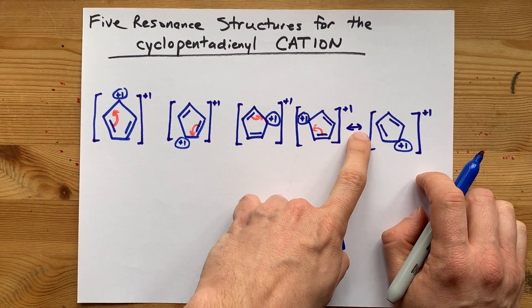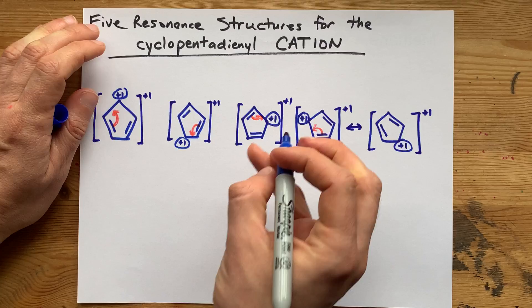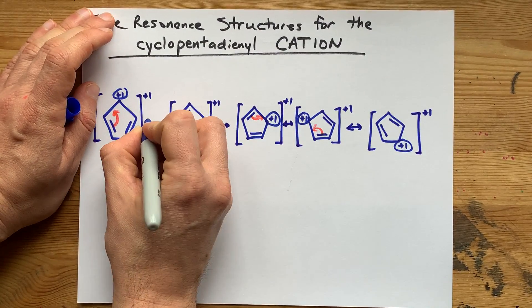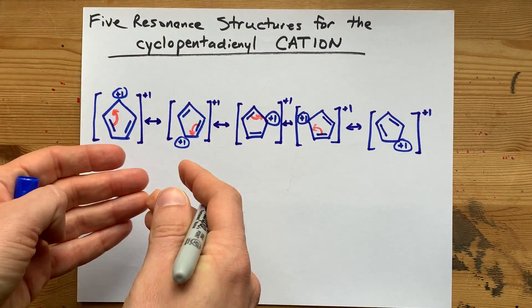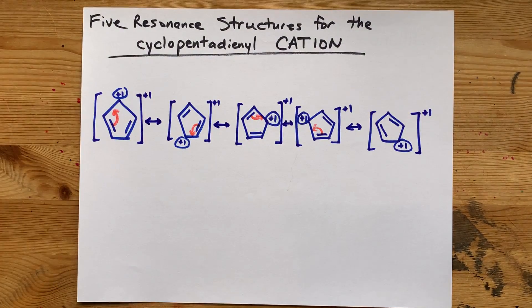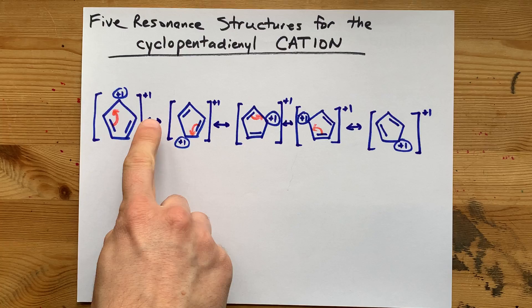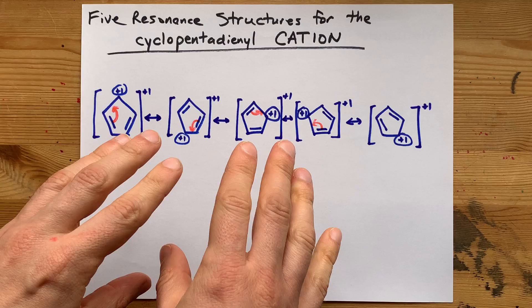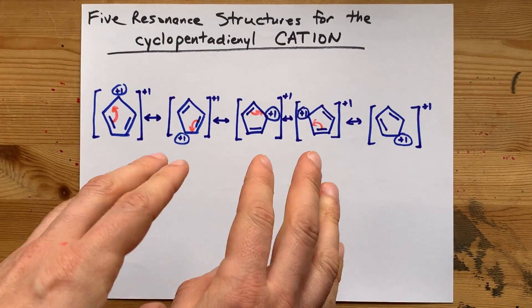But what you do need is this type of arrow. It's a single line with a double-headed arrow on either end. This is the resonance arrow. It is different from the equilibrium arrow, and it's different from the reaction arrow, which only goes in one direction.